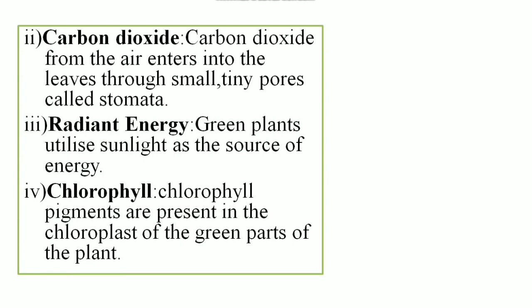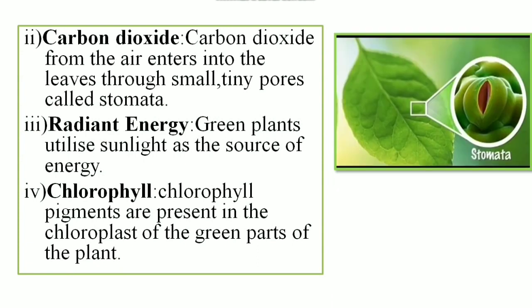Next is carbon dioxide. The source of carbon dioxide is atmosphere. So from the atmosphere carbon dioxide enters into the leaf cells through the stomata. So the stomata are the tiny pores located mostly on the lower surface of the leaves.